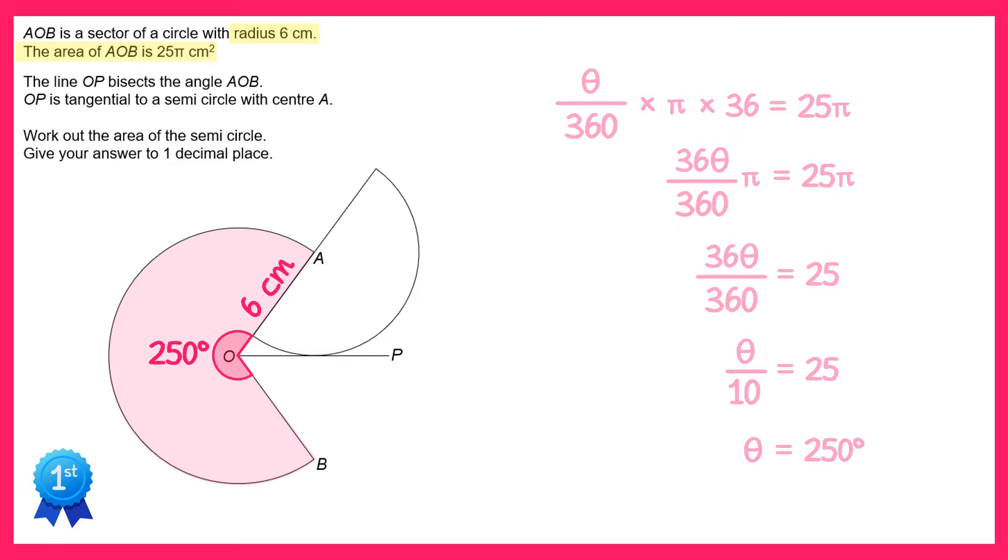Now the question wants us to work out the area of the semicircle, which is this one here. To find the area of any circle you need to know its radius, so I'm going to mark a line from the center of the circle, which is at A, straight down until we hit the line OP. This will form a right-angled triangle.